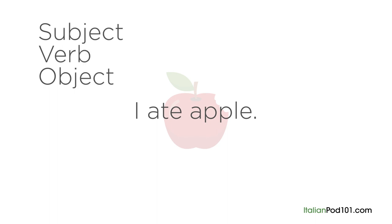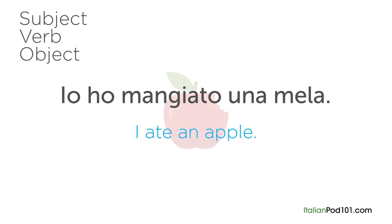If we break down the English sentence 'I ate apple,' we can see that the subject 'I' is presented first, followed by the verb 'ate,' and then finally the object 'apple' is positioned last. This is the basic word order for sentences in English. Now let's compare that same sentence, 'I ate an apple,' in Italian.